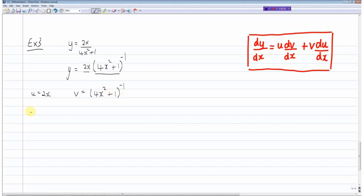du/dx is equal to 2, dv/dx, here I'm using the chain rule to work this out, which is equal to minus 8x(4x² + 1) to the power of minus 2.